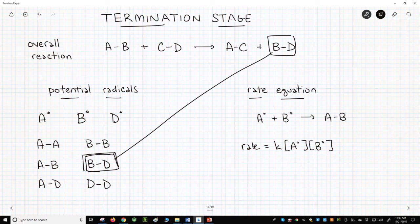The answer is no, because the rate of termination steps is so slow, the amount of product formed from one of the termination steps is also vanishingly small. Essentially, all the BD in the reaction will arise through the propagation steps.